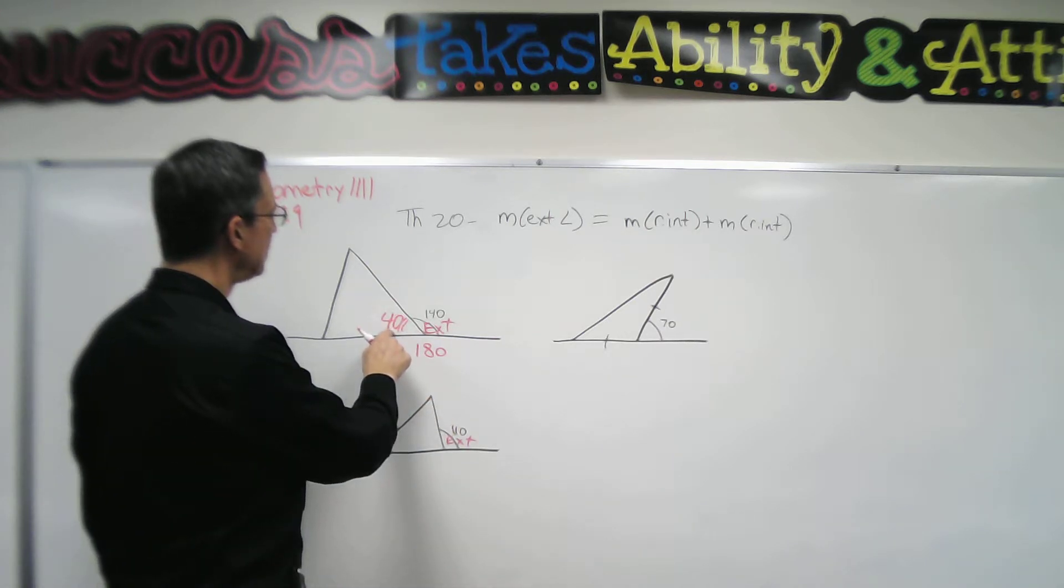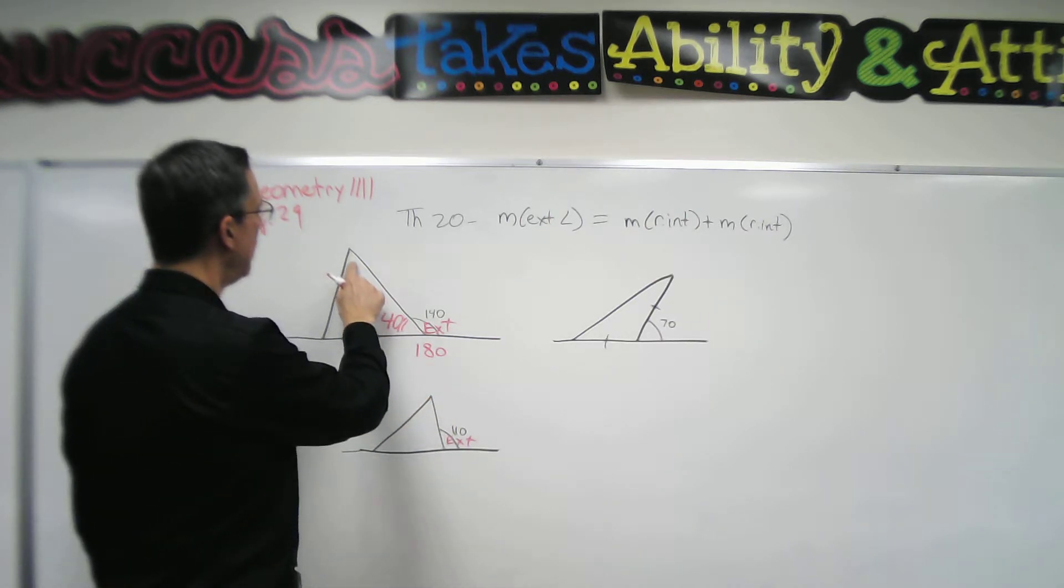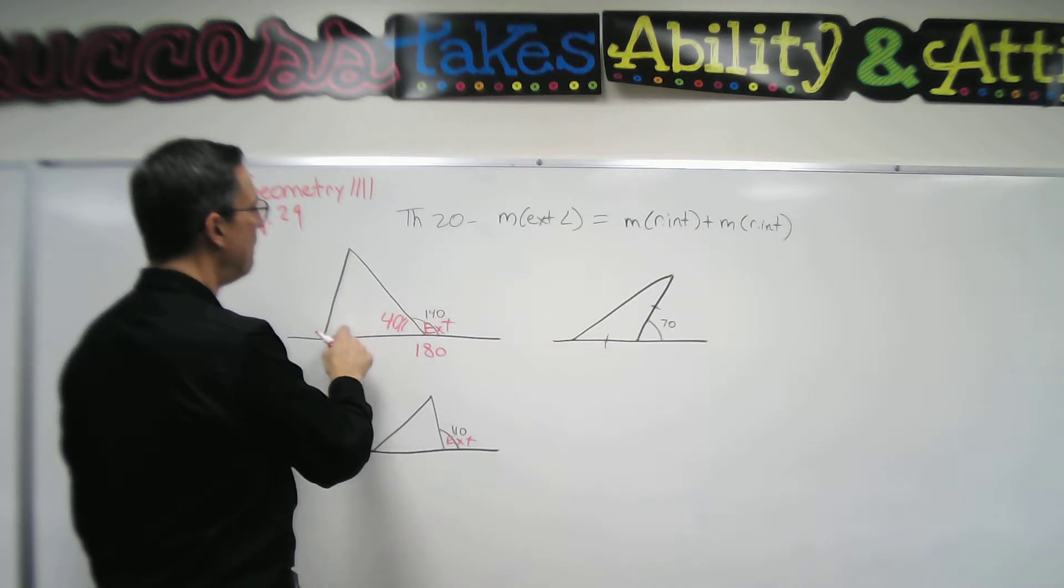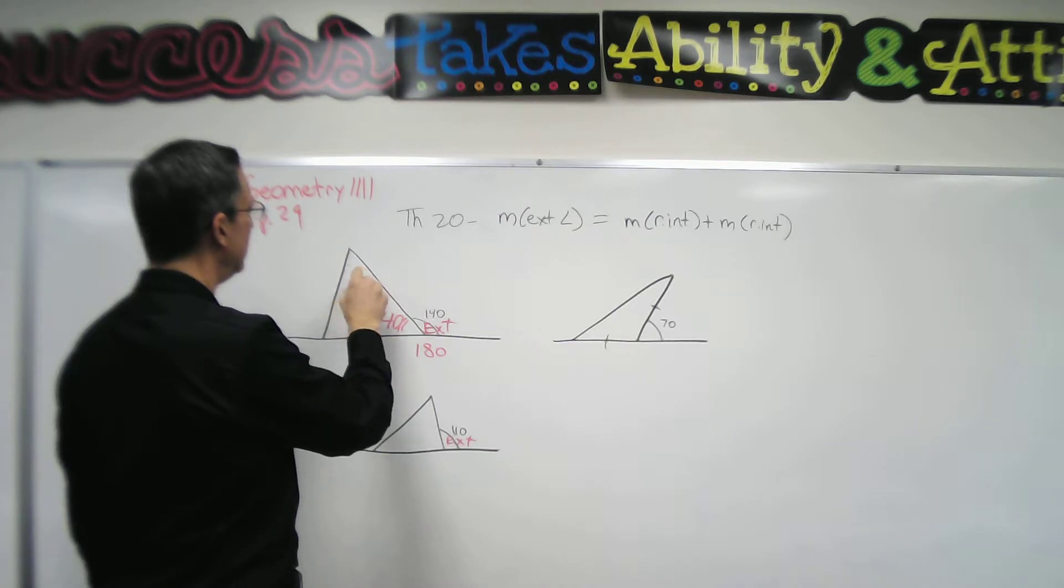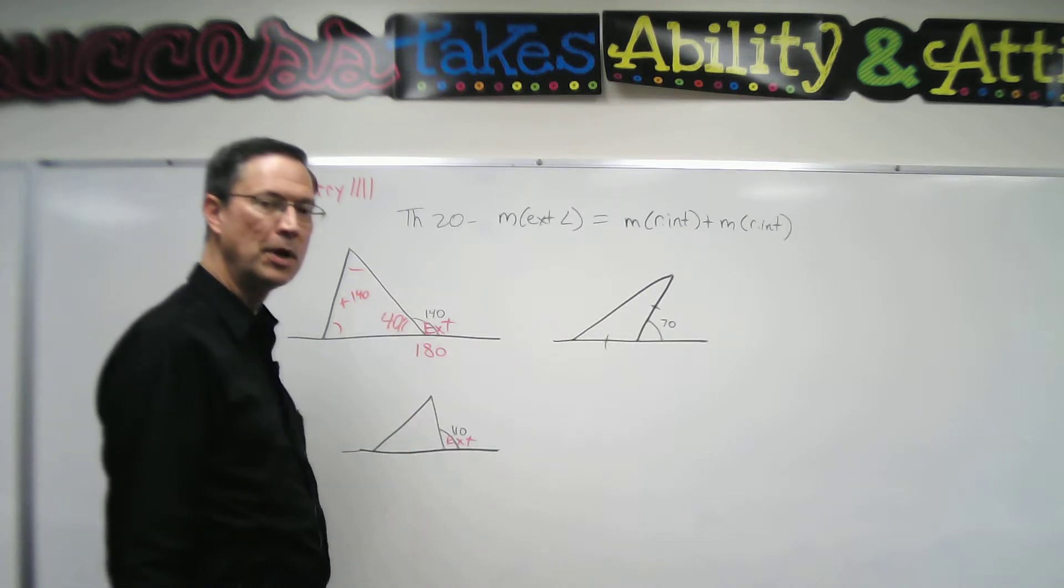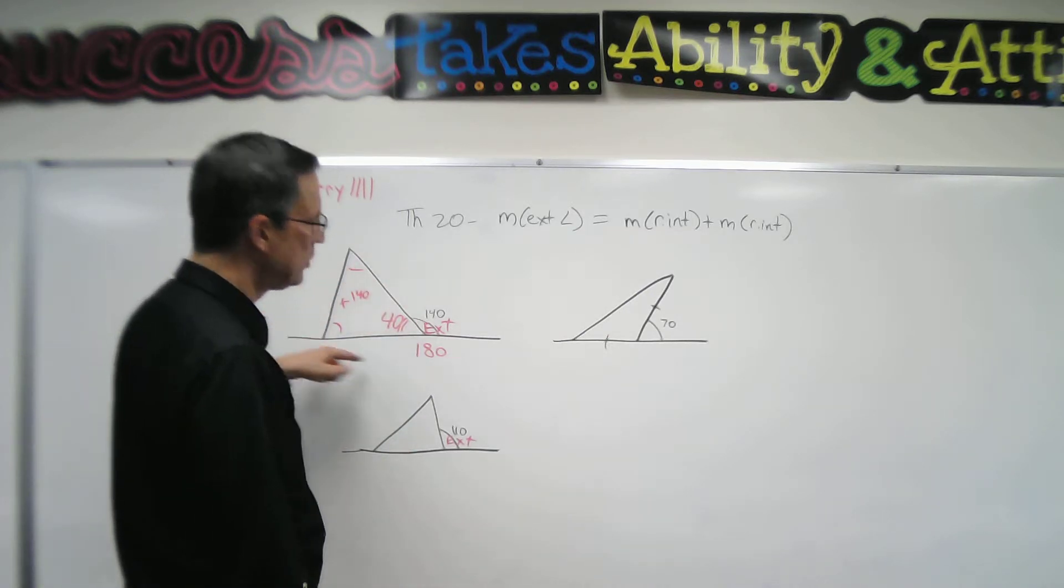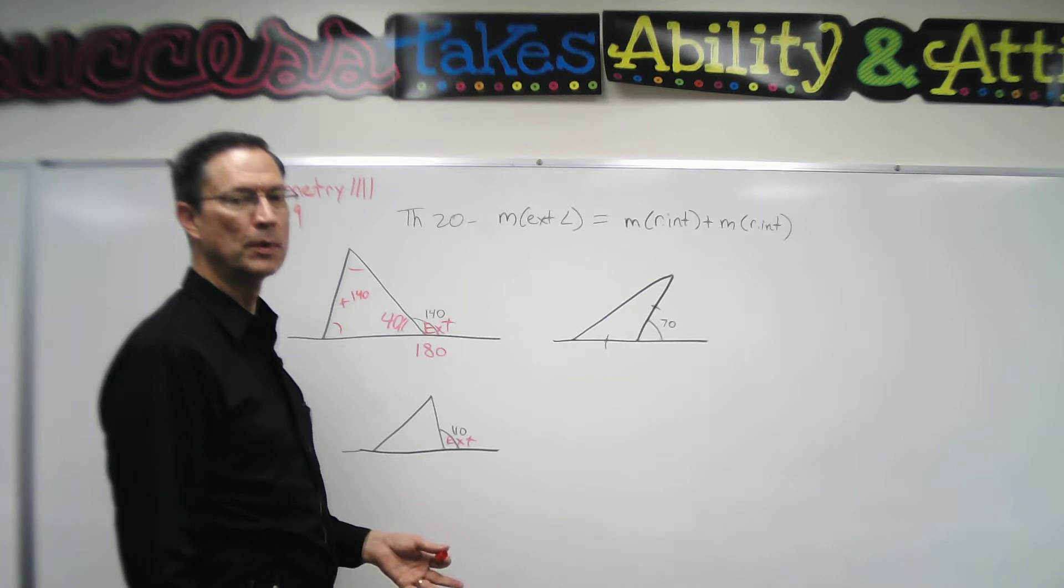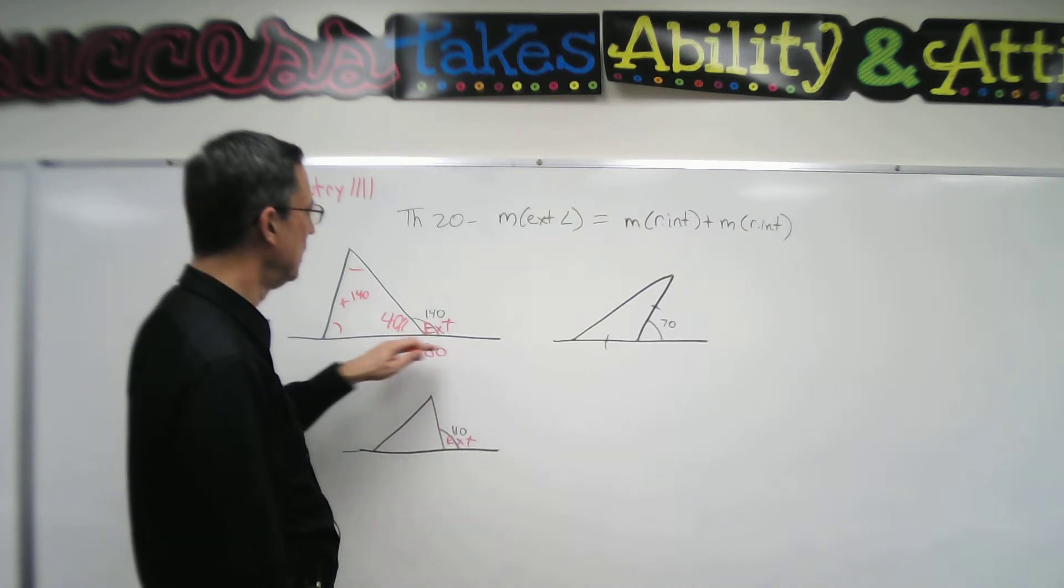If this one is 40 degrees, now I don't know how much each of these individually are, but I know that when I add them together, they will have to equal 140 degrees. And how do we know that? Because every triangle will have to also equal 180 degrees. So the same as a line, 180 degrees.